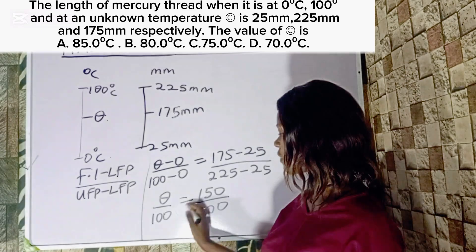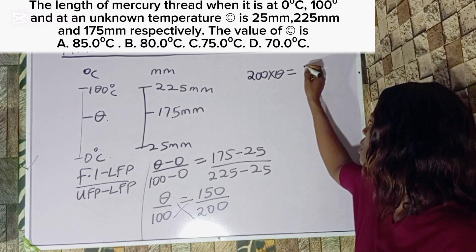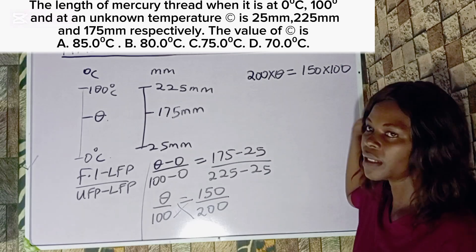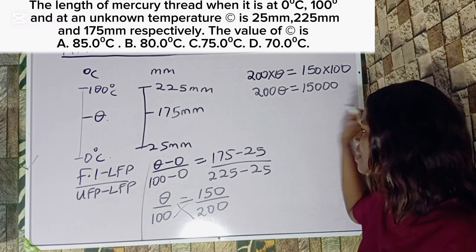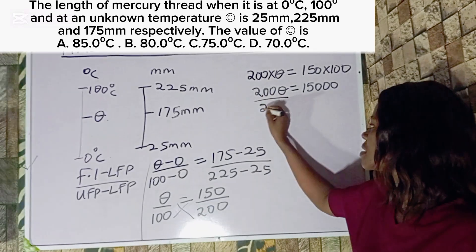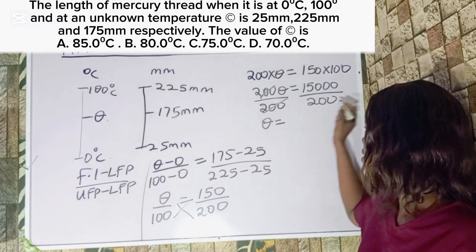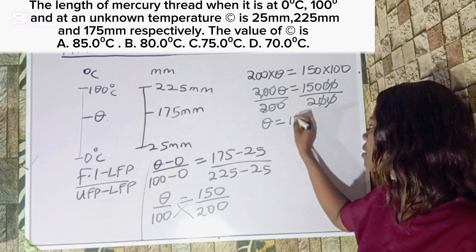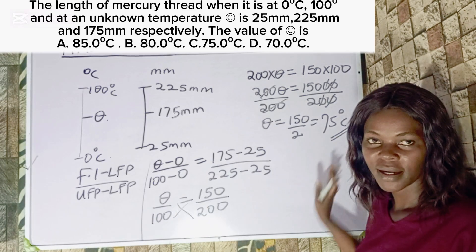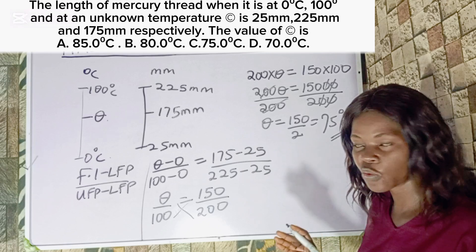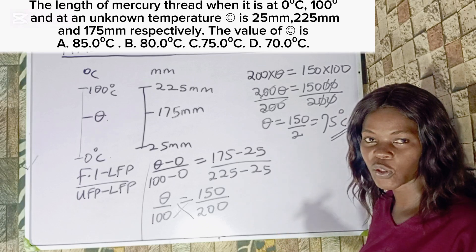Cross multiplying: 200 multiplied by theta equals 150 multiplied by 100. This gives us 200 theta equals 15,000. Dividing both sides by 200, theta equals 75 degrees Celsius. If you understand the concept and follow it correctly, you will get the answer. The correct option is Option C.